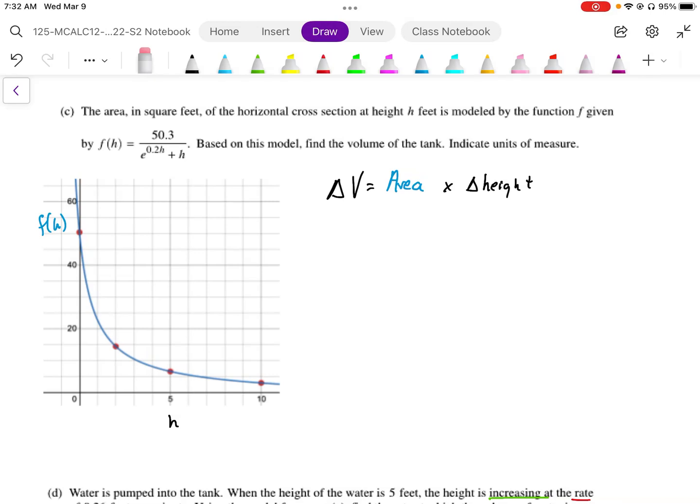Question number 1c. The area in square feet of the horizontal cross-section at height h is modeled by the function f given by f(h) equals 50.3 over e to the 0.2h plus h.